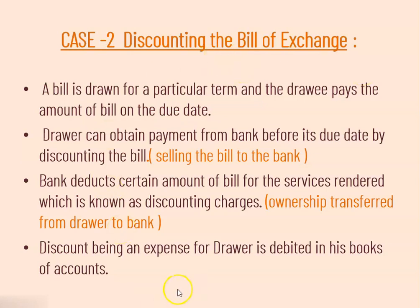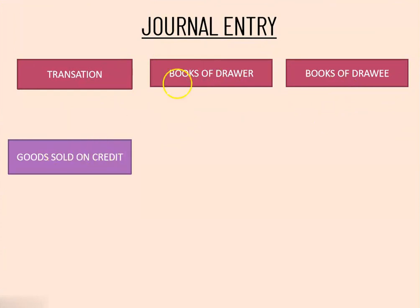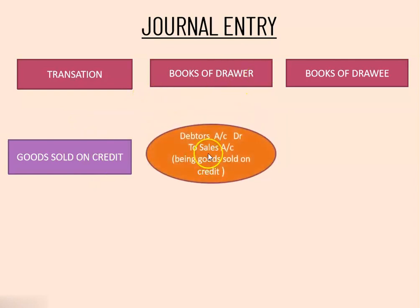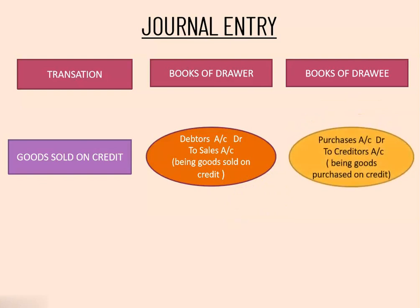Now let us see the journal entries of case number 2 in the books of drawee. When goods are sold on credit basis, in the drawer's book, debtor's account is debited to sales account — being goods sold on credit. In the drawee's book, he has purchased the goods and therefore purchase account is debited to creditor's account. This is the entry of sales and purchase.